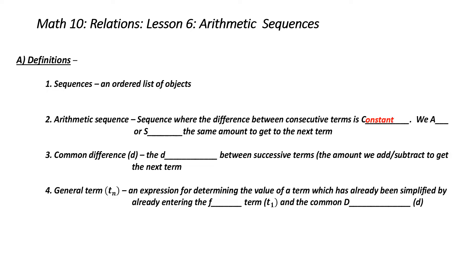What does this mean? It means we add or subtract the same amount to get to the next term. Next, the common difference, or D, is the difference between successive terms — the amount that we add or subtract to get to the next term.